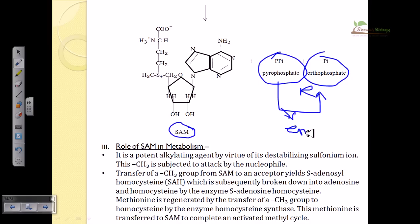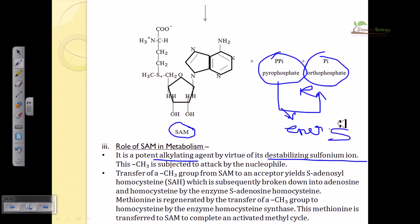SAM is a potent and different alkylating agent. It is a very important alkylating agent because it contains a destabilizing sulfonium ion — that's why we write 'S' before adenosylmethionine. This CH3 is subject to nucleophilic attack, meaning SAM can snatch the CH3 group from other moieties and also donate CH3 to other moieties. Transfer of a CH3 group from SAM to an acceptor forms S-adenosylhomocysteine, or SAH.